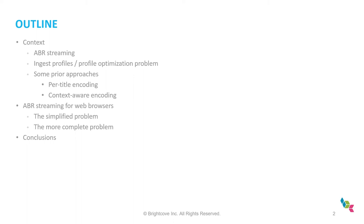I work for Brightcove and today I'll be talking about optimal design of encoding profiles for web streaming. I'll start with basics, talk about how streaming works, what are the encoding profiles, and approaches towards designing such profiles optimally, things like per-title encoding and context-aware encoding.